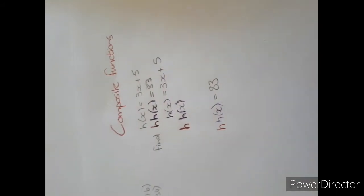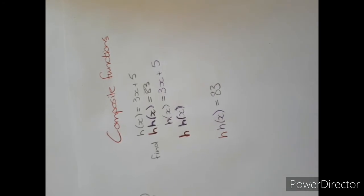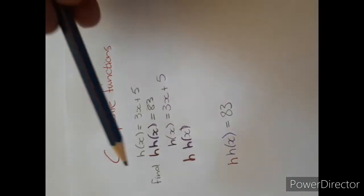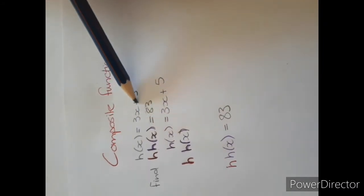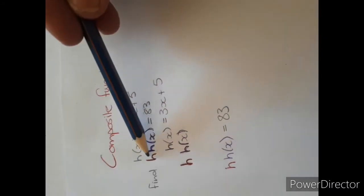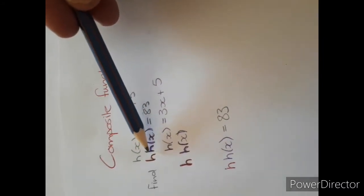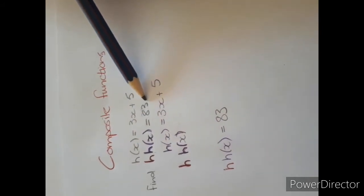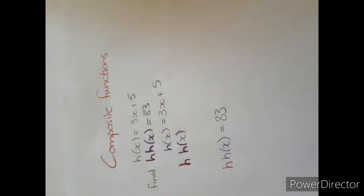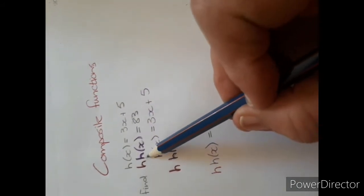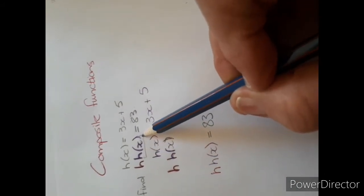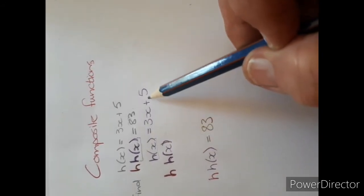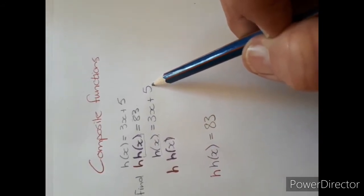This is another example of composite functions. They are giving you H(x), which is 3x plus 5, and they say you must find H(x) equals 83. So remember, we start with the right, which I colored purple now. So H(x) equals 3x plus 5.